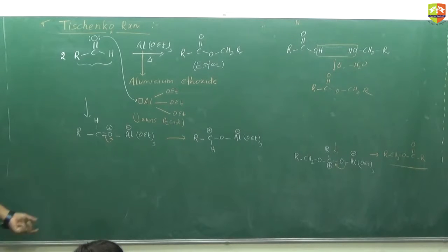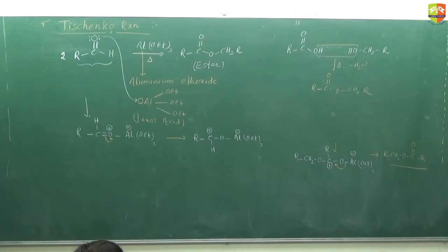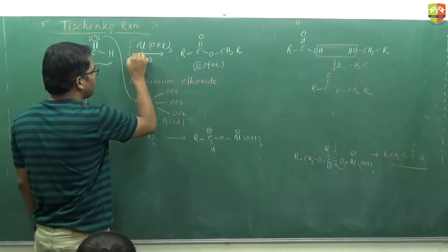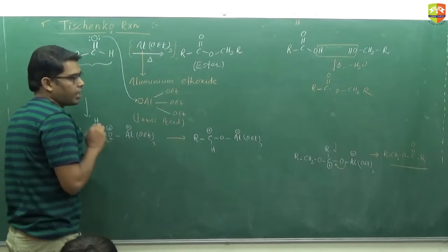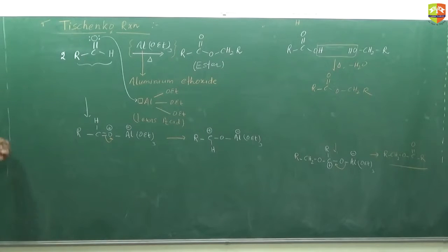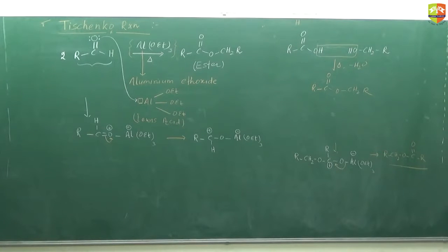The mechanism is a bit different from the other reactions, but no need to write down the mechanism in the exam. The reagent you must take care of: aluminium ethoxide for the Tischenko reaction. Whatever the reactant aldehyde is given, write down the oxidation and reduction products, and then remove the water molecule.